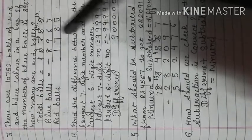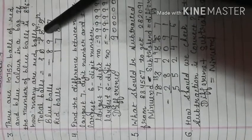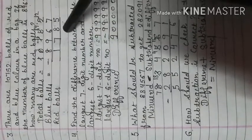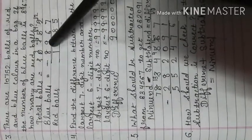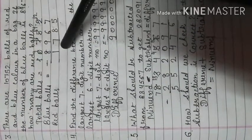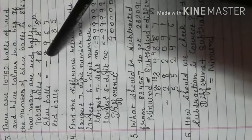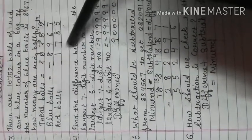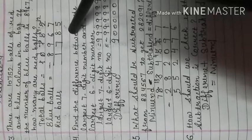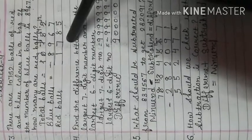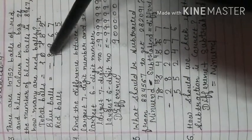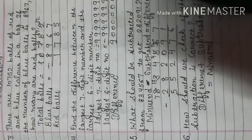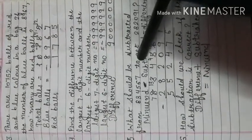Similarly, here we have 14, so subtracting 6 from 14 gives 8; 9 from 16 gives 7; and 8 from 9 gives 1. Just regroup wherever needed, keeping the problem statement in mind. Now move to the next question.